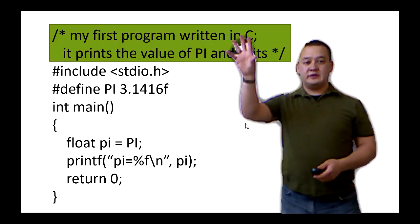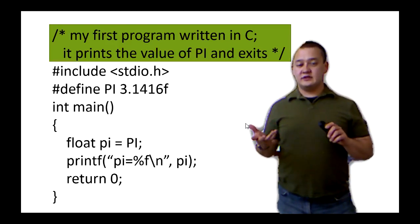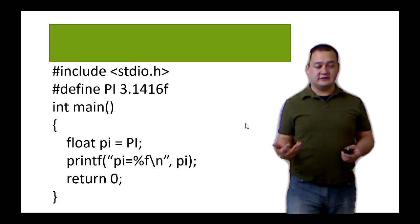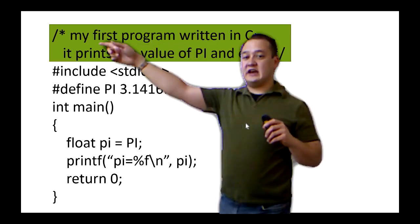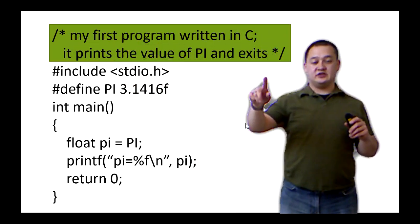The first part up here is called a comment. This is code that's going to be stripped away by the preprocessor and it's never actually going to be processed. When you look at it, how we know it's a comment is that it starts with this slash asterisk up in the top over here, and then it ends with this slash asterisk over here.